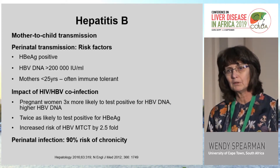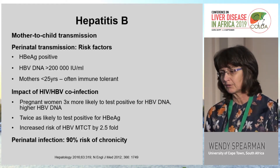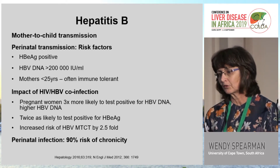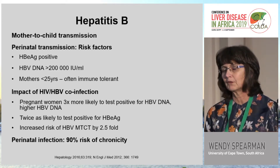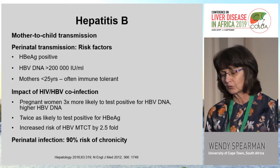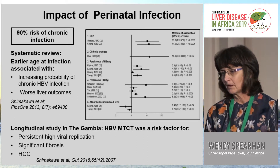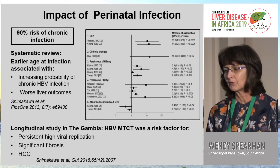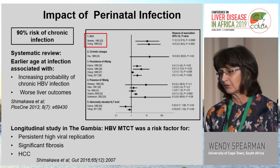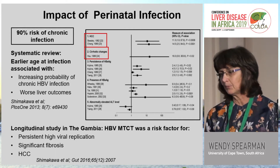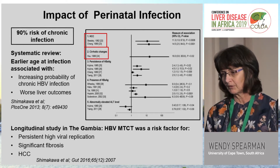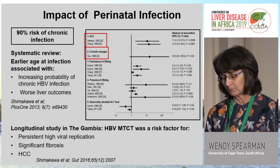In our regions we must remember the impact of HIV. These women are three times more likely to test positive for DNA, have much higher DNA levels, and twice as likely to test positive for surface antigen. A study from Africa showed that the risk of mother-to-child transmission of hepatitis B is increased 2.5-fold in HIV co-infection. Once infected perinatally, the risk of chronicity is 90%. Early age of infection is associated with increasing probability of chronic infection and worse outcomes in terms of HCC and cirrhosis. A longitudinal study in the Gambia showed mother-to-child transmission was a risk factor for persistent high viral replication, significant fibrosis, and development of HCC.